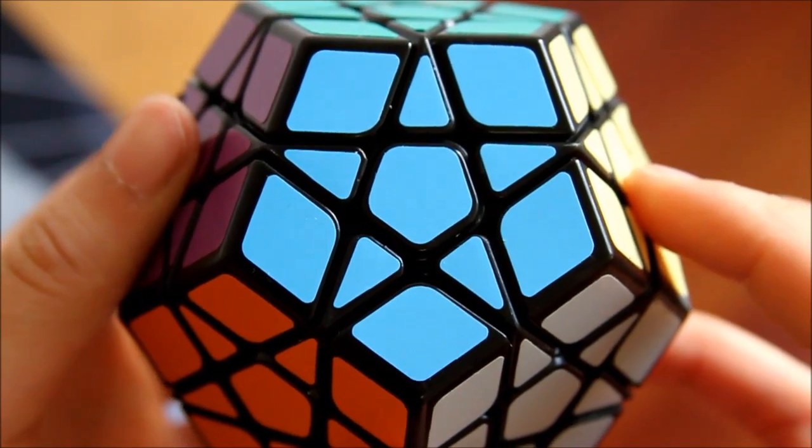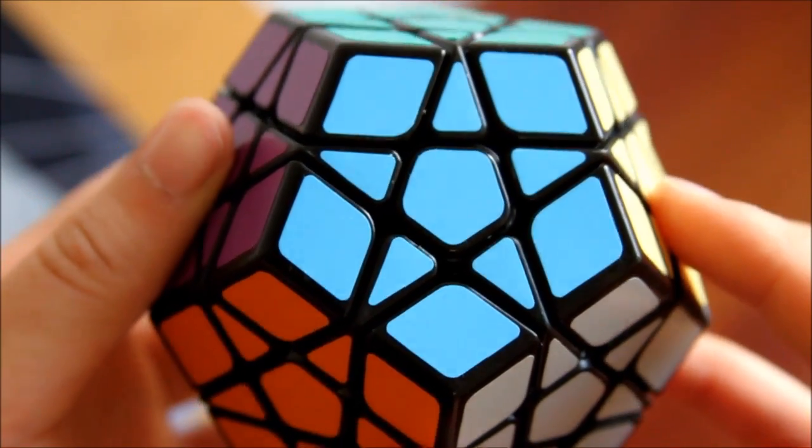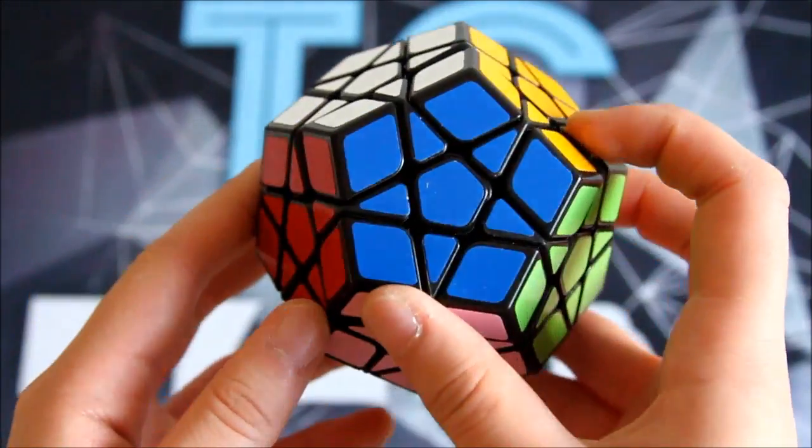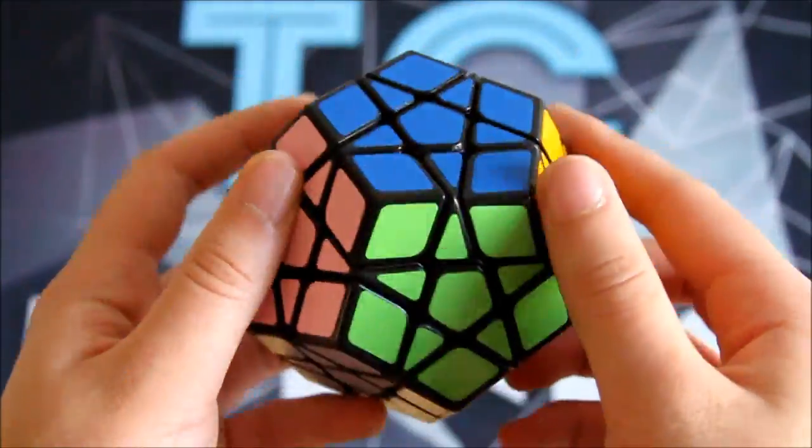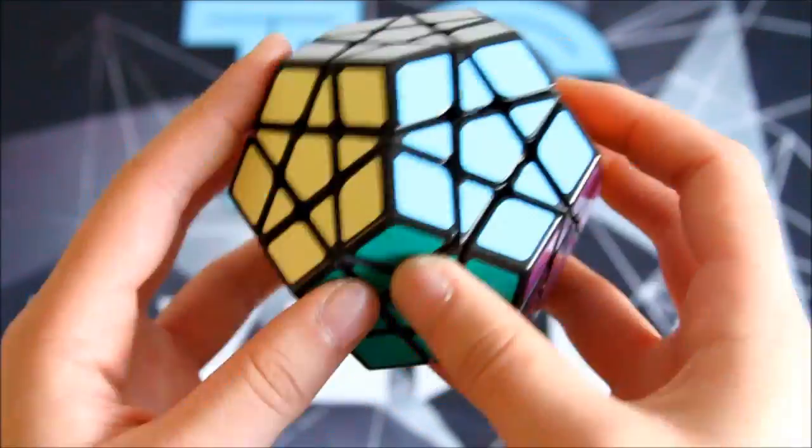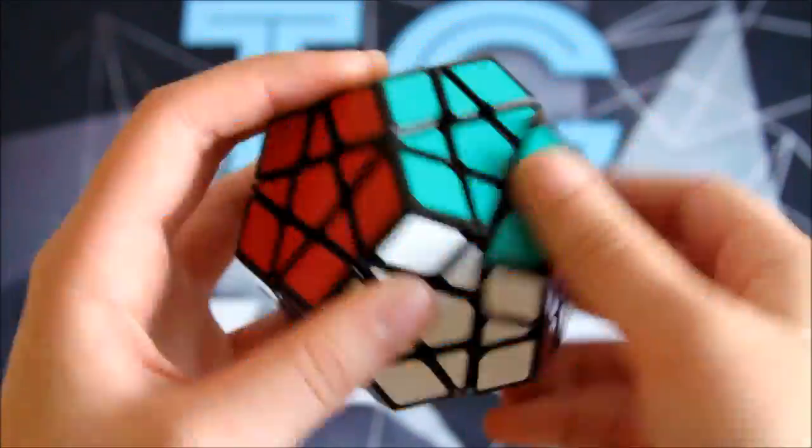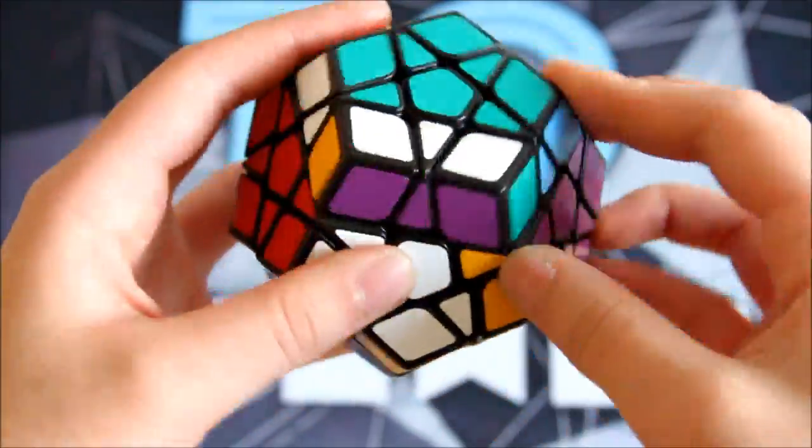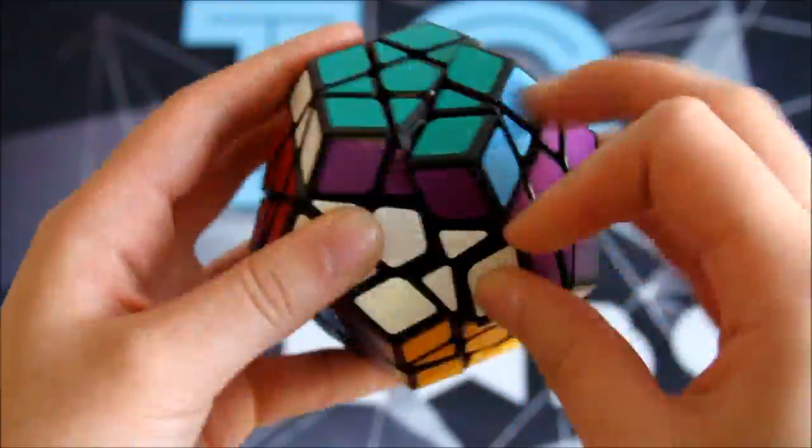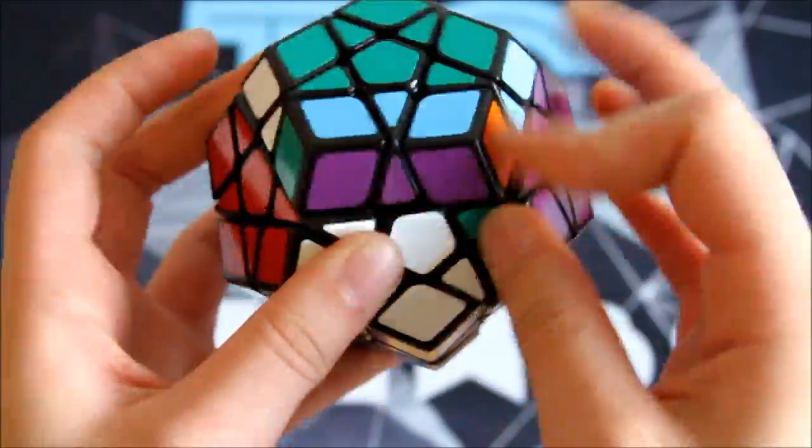For starters, I definitely really like the look of it. It has smaller edges and centers, so these bigger corners may be Fangshi's way of improving the grip instead of having ridges that stick out or anything like that. Let's just see how this thing turns. Definitely a Fangshi puzzle. It feels really really sandy and dry.